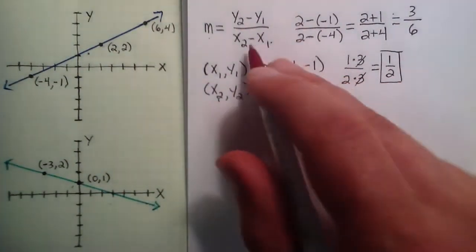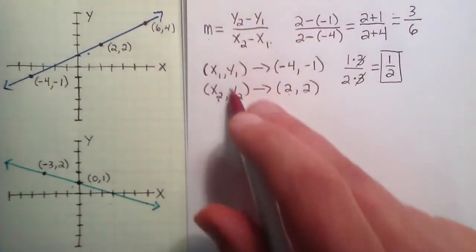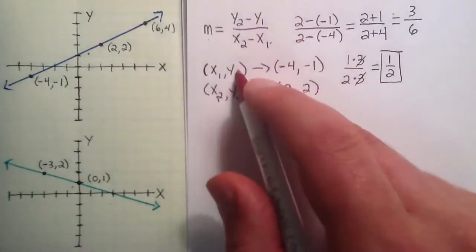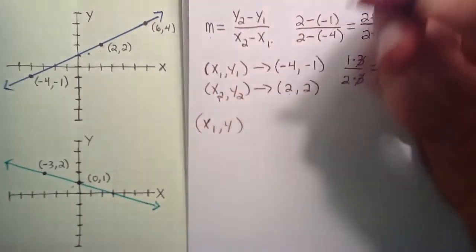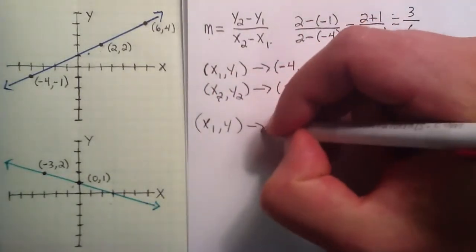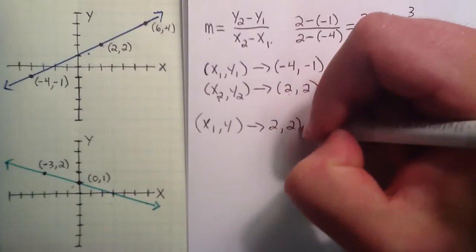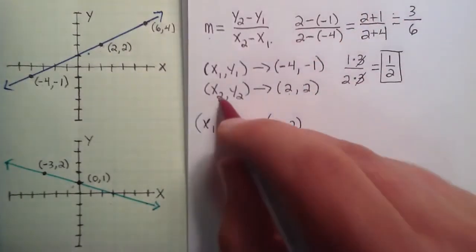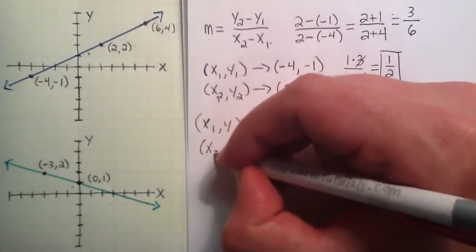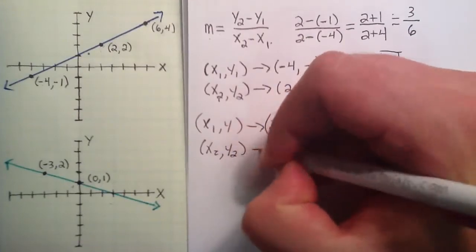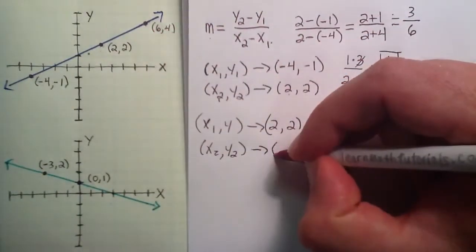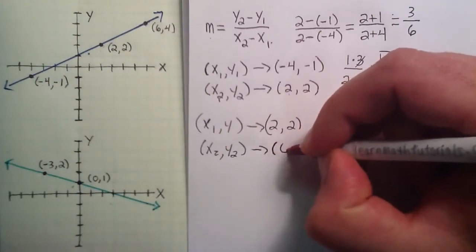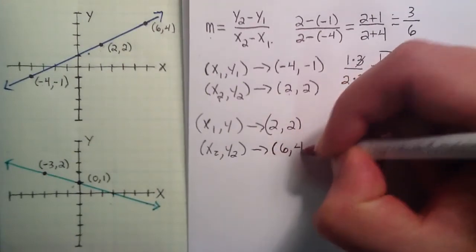So let's test to make sure that it doesn't matter which points we choose. So this time, let's let our x1, y1 be the point 2, 2. And then let's let our x2, y2 be the point 6, 4. So the only condition is that they're points that both fall on the line.